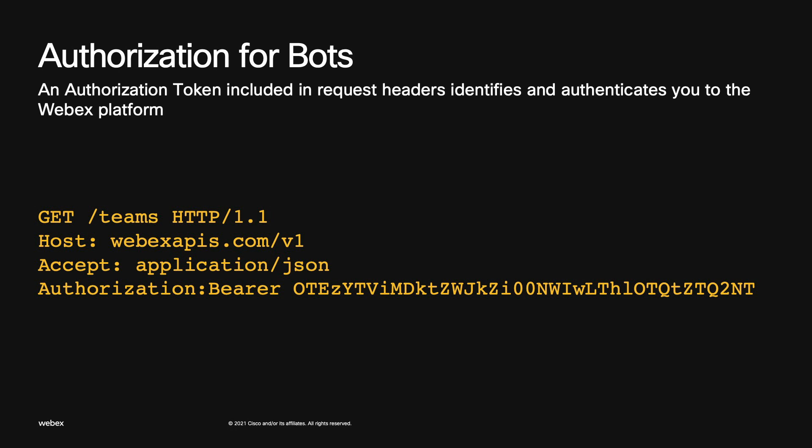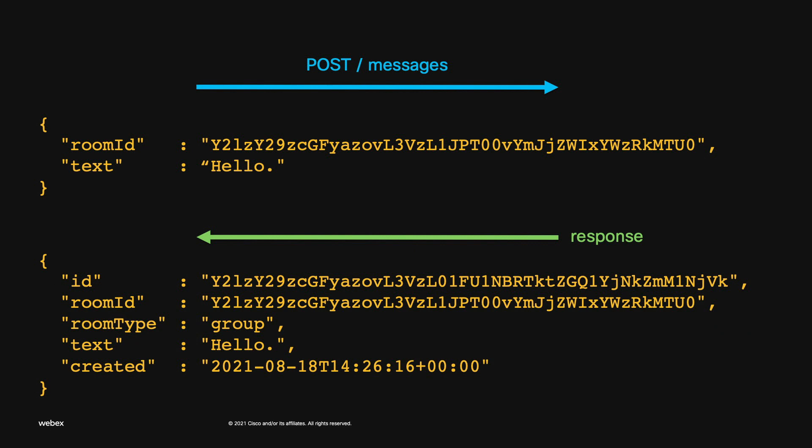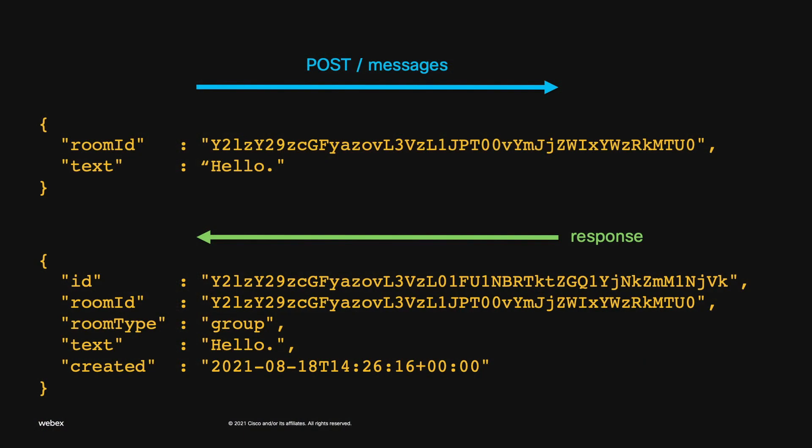Webex not only checks that the bearer token is valid, but also determines if the API request is allowed at all. For example, if a bot tries to create a message in a Webex space it's not a member of, Webex would reject the POST request as unauthorized. This example shows the API call a bot uses to create a message: it sends a JSON document to the messages API containing the room ID and the message content. The API responds with the message ID, the space ID, the space type, the text content, and a timestamp.